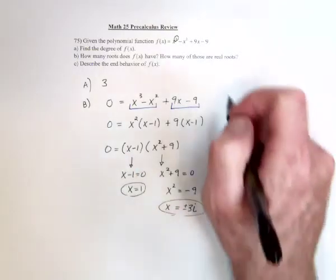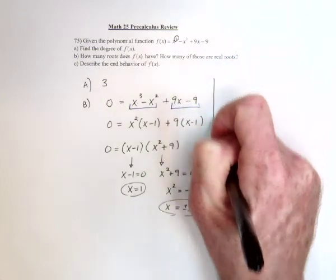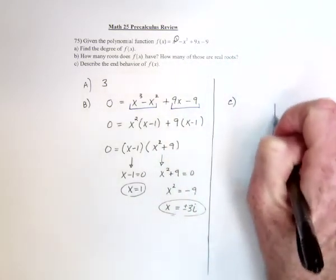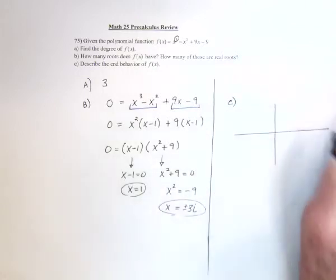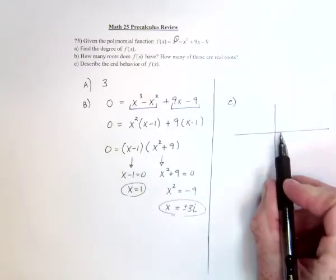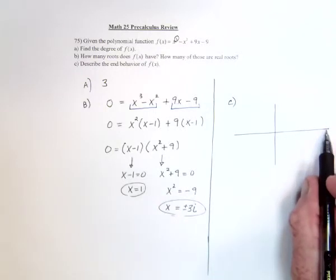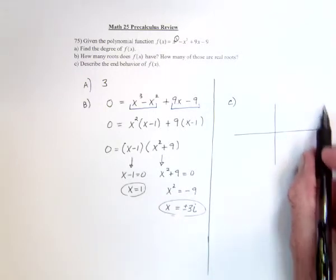Then, for something completely different, describe the end behavior. So, for part C, the idea of the end behavior is we're not talking about when x equals 1 or 2 or 3, but way out here when x is in the hundreds or in the thousands. What's happening to the graph?